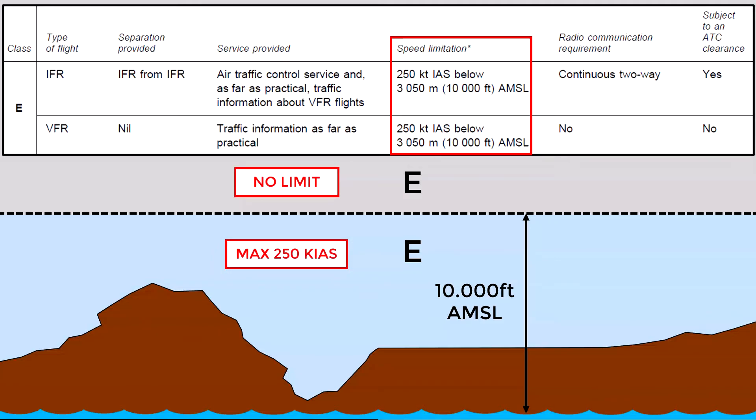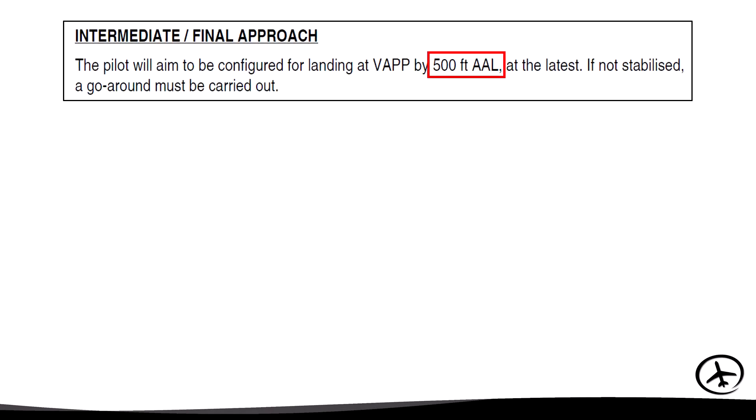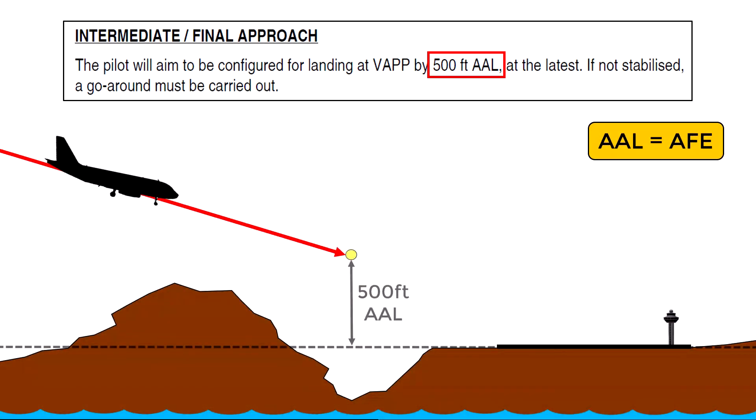Now we will see an example where the abbreviation AAL is used. This statement for example specifies that the aircraft must be configured and stabilized for landing at 500 feet AAL. That is 500 feet above the airport. Otherwise it will have to execute a go-around. Remember that AAL and AFE have the same meaning.